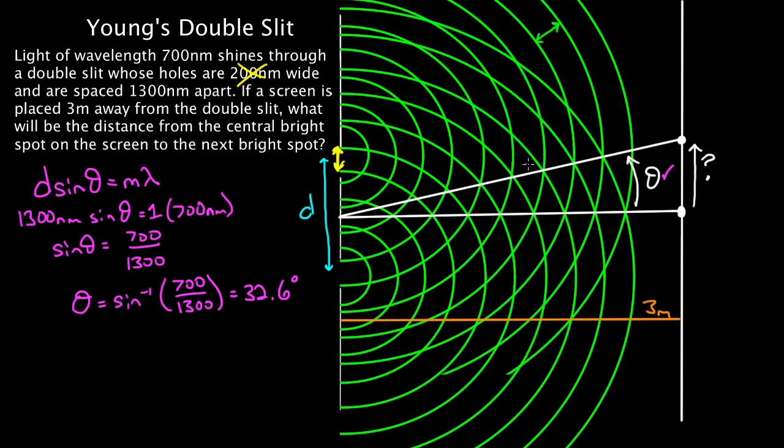That's what this angle is right here, 32.6 degrees, but that's not what I was trying to find. What I'm trying to find is this distance, not this angle. So how do we do that? Well, this side, this side right here, I'm going to call it delta y because it looks like it's a vertical distance.